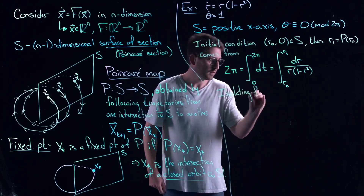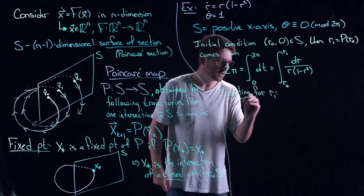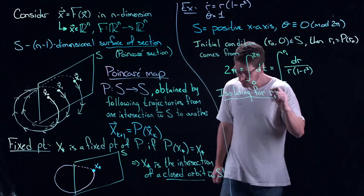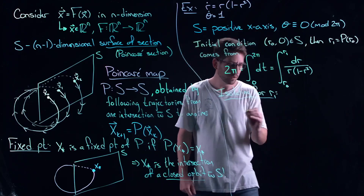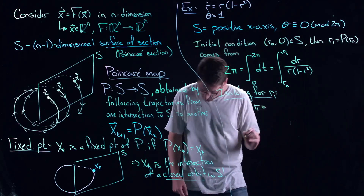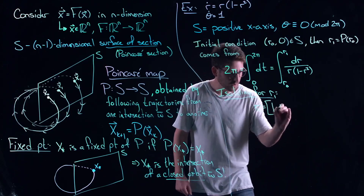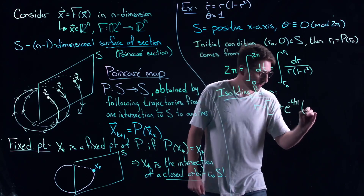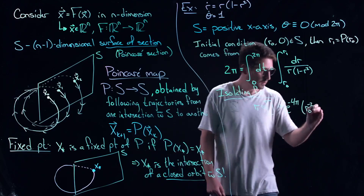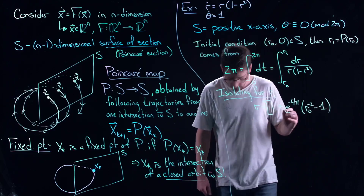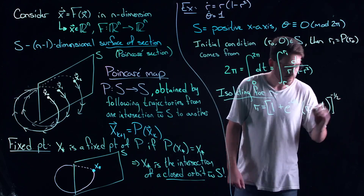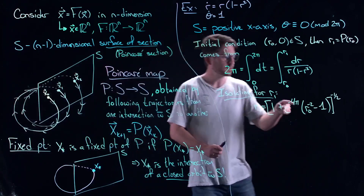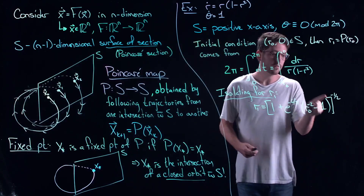Isolating for R1 gives you an ugly little formula: R1 = 1 / sqrt(1 + e^(−4π) · (R0^(−2) − 1)). It's a really ugly formula, but completely valuable. That tells me that if I start at R0, I go to R1 defined by this formula. That's my Poincaré map — if I start anywhere in the section, R1 is the iteration under my Poincaré map.